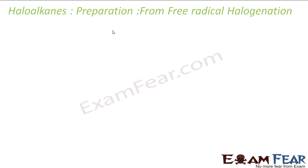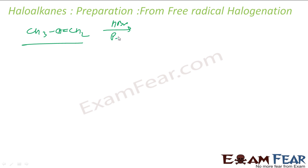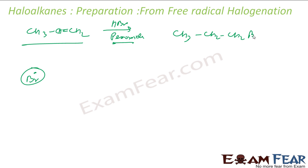Addition of HBr is also a free radical halogenation reaction. For example, if I have CH3CH=CH2 and add HBr in presence of peroxide — we have seen this in Class 11 — it goes via free radical mechanism, forming a Br free radical, and follows the anti-Markovnikov rule. The product will be CH3CH2CH2Br, because bromine gets added to the terminal carbon instead of the internal carbon. This is an example where a free radical reaction gives a haloalkane from an alkene.